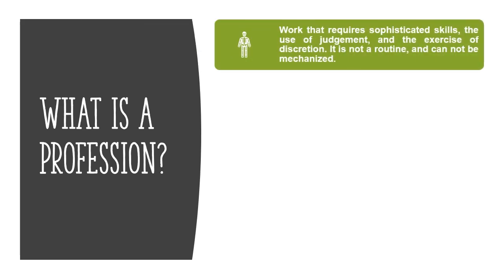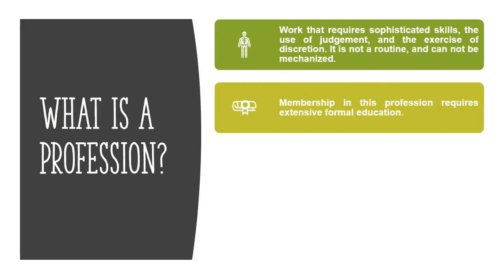It is clear that we require a set of guidelines to define what a profession is. The first idea is that a profession encompasses work that is of a sophisticated nature and requires good judgment and discretion. Additionally, to be part of such a profession, you need some form of formal education and must join a certified educational institution — such as a university — that grants degrees allowing you to practice.